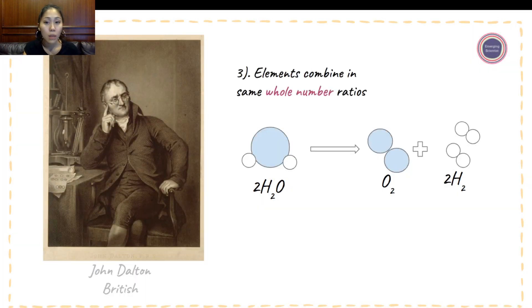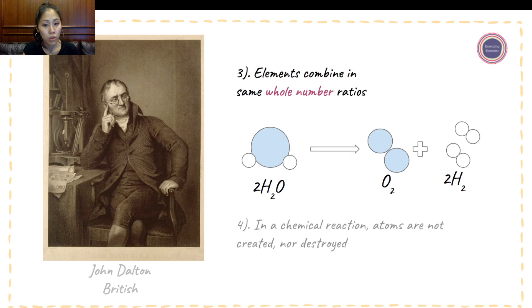The third part is that elements combine in the same whole number ratios. And the fourth part is in a chemical reaction, atoms are not created nor destroyed. So through time, we've been able to see through mass or through proportions or even here through the atomic theory that we're learning a lot about matter and a lot about the pieces of matter in terms of conservation. We're recognizing that in a lot of cases, like the chemical reaction here, again atoms are not created nor destroyed. In this example here that we covered earlier, we do see here that the elements combine in the same whole number ratios. So we do see that there aren't any decimals in these combinations of the chemical reactions.